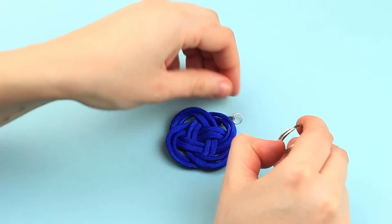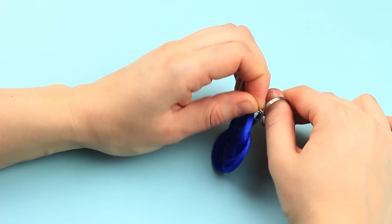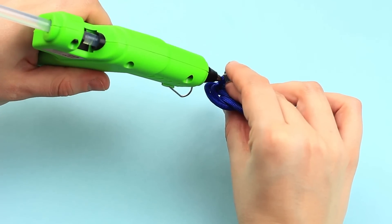Now open a keychain ring and put on the accessory. Hot glue the cord again to secure well.